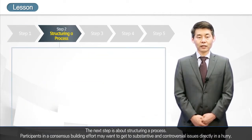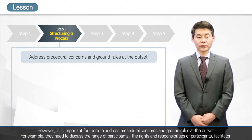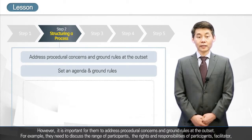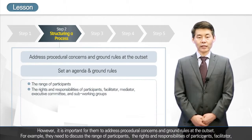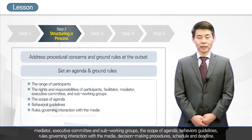The next step is structuring a process. Participants in a consensus-building effort may want to get to substantive and controversial issues directly in a hurry. However, it is important for them to address procedural concerns and ground rules at the outset — including the range of participants, their rights and responsibilities, facilitator, mediator, executive committee and sub-working groups, the scope of agenda, behavior guidelines, rules governing interaction with the media, decision-making procedures, and schedule and deadlines.